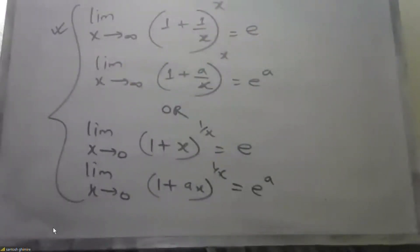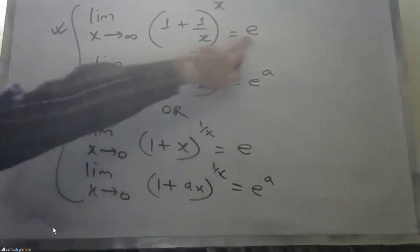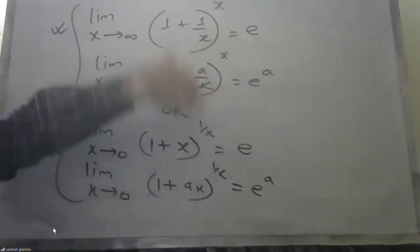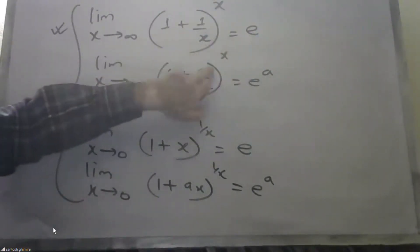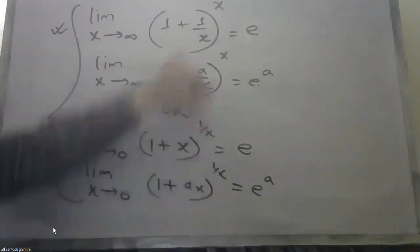Limit as x approaches infinity of (1 + 1/x)^x — by definition, that is the number e. This gives us a power of e upon x, or a/x to the power e.